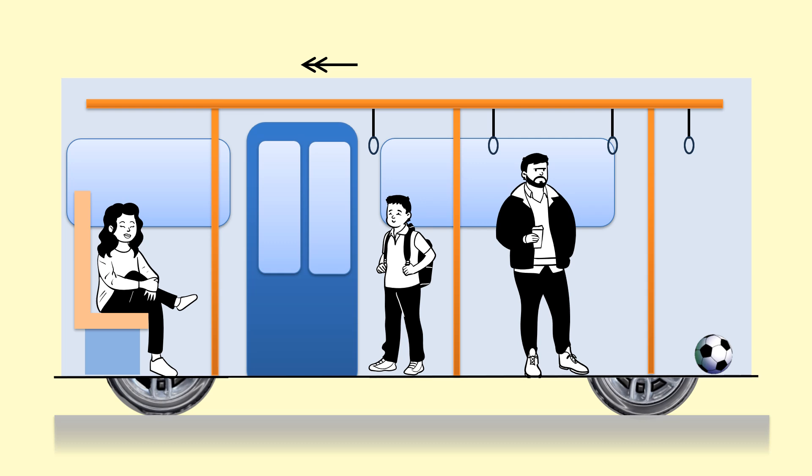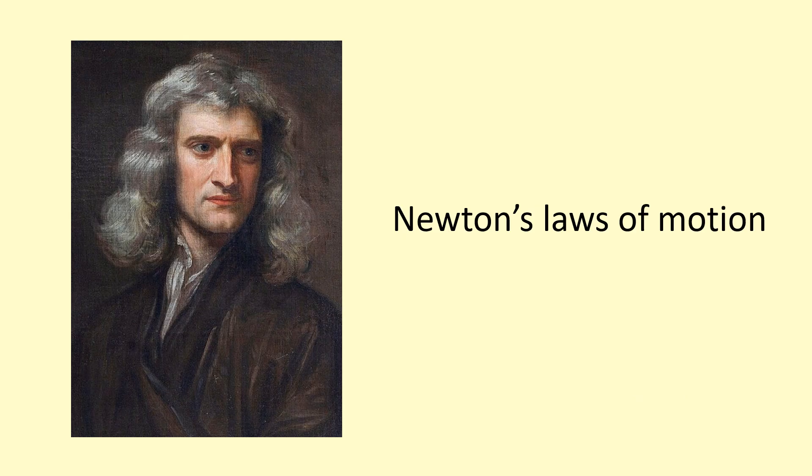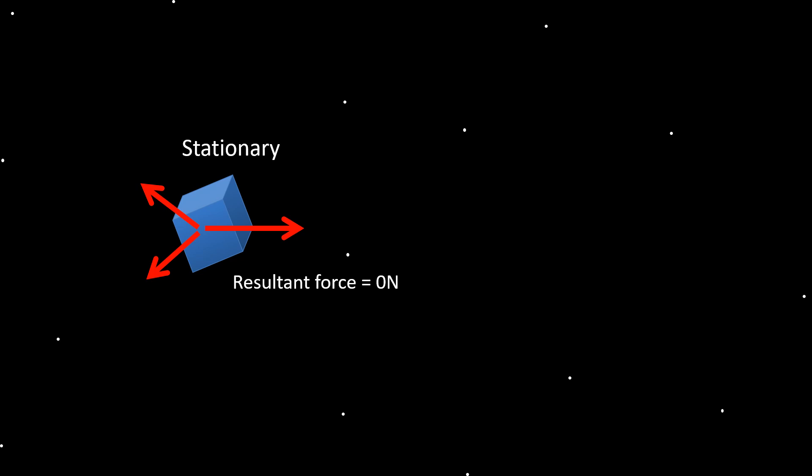We're going to explain this using Newton's laws of motion. Consider an object in deep space, initially stationary. If we apply a bunch of forces that add up to a resultant force of zero newtons — so the net force is zero — the object remains stationary. Without a resultant force, you can't change the velocity.